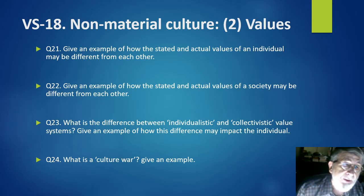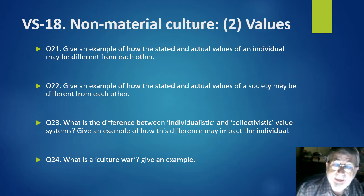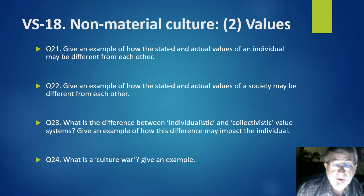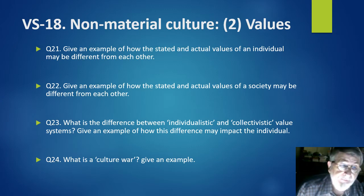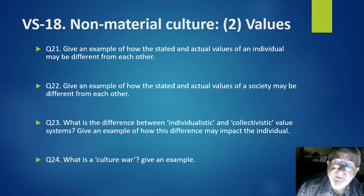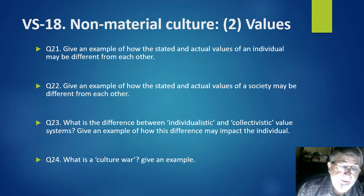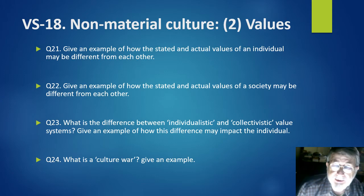Now on to values. Question 21: give an example of how the stated and actual values of an individual may be different from each other. Question 22: give an example of how the stated and actual values of a society may be different from each other. Question 23: what is the difference between individualistic and collectivistic value systems? Give an example of how this difference may impact the individual.